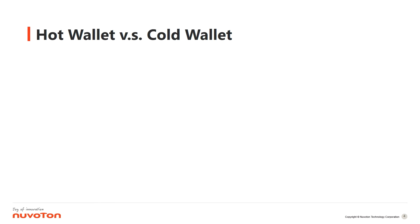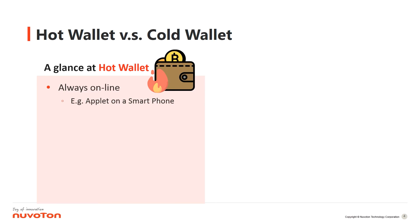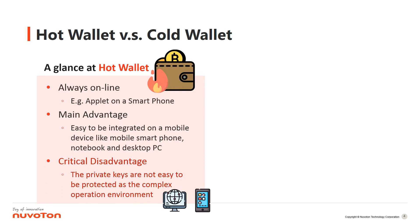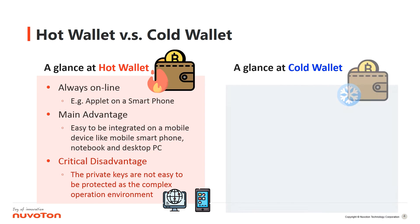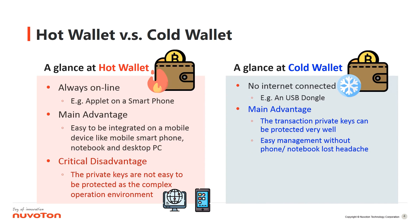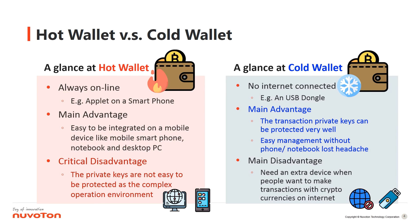Let's take a look at the difference between a hot wallet and a cold wallet. A hot wallet is always online, like installing an app on a smartphone — easy to integrate on a mobile device like a smartphone, notebook, or desktop PC. But the transaction private keys are not easy to protect due to the complex operating environment. The cold wallet can well protect the transaction keys, though it needs an extra device like a USB dongle. But it's worthwhile since the transactions are all related to money.